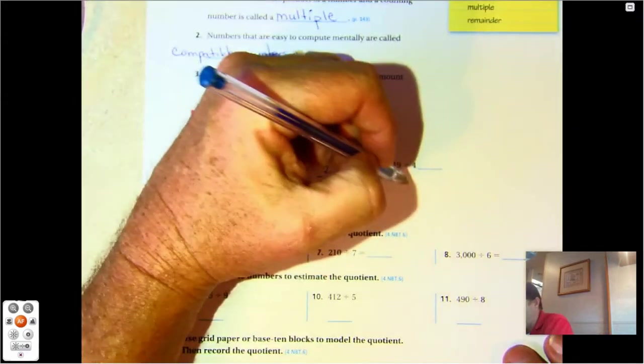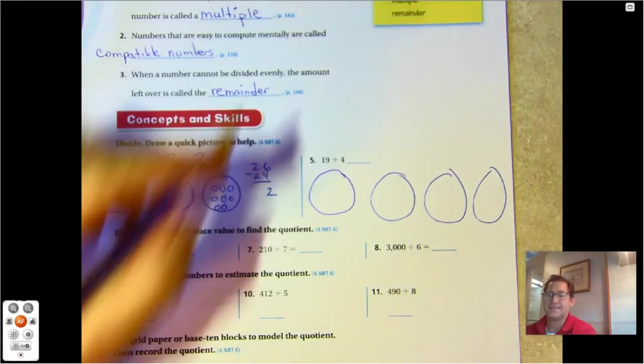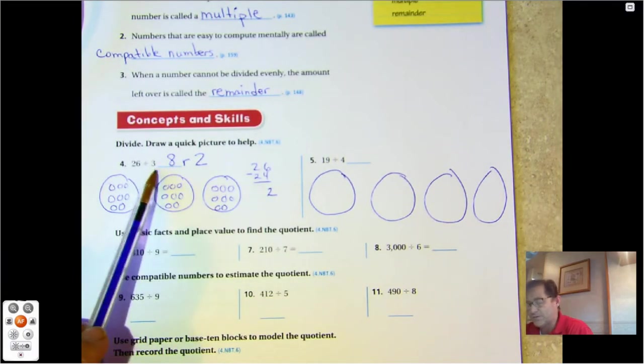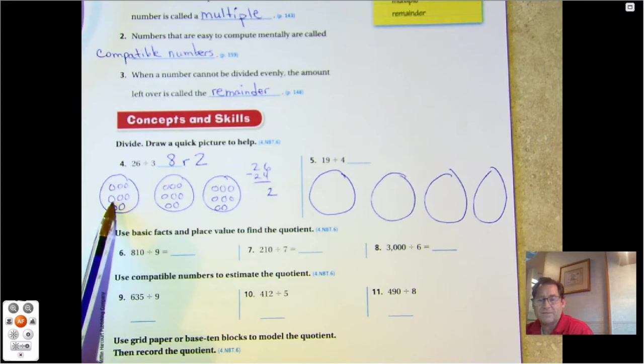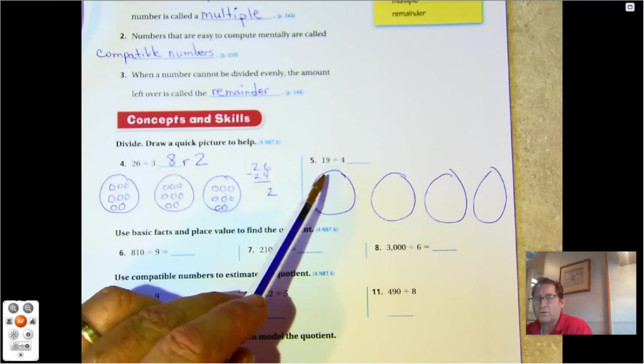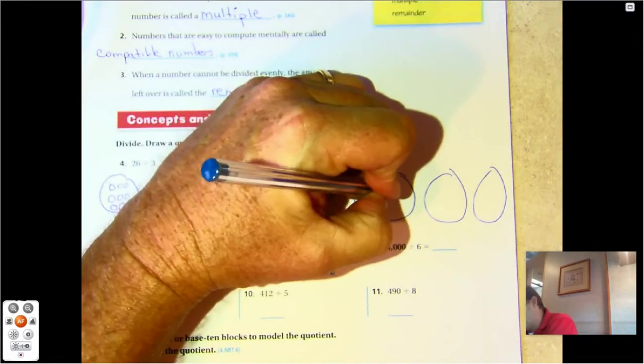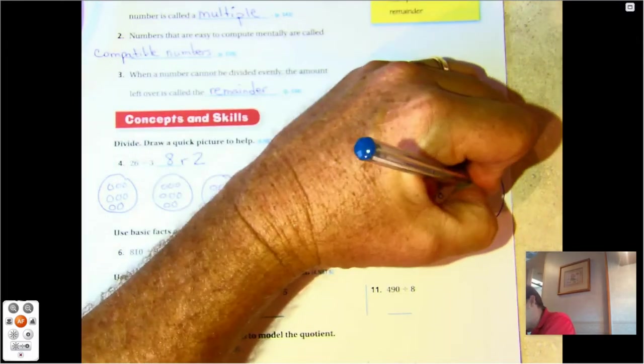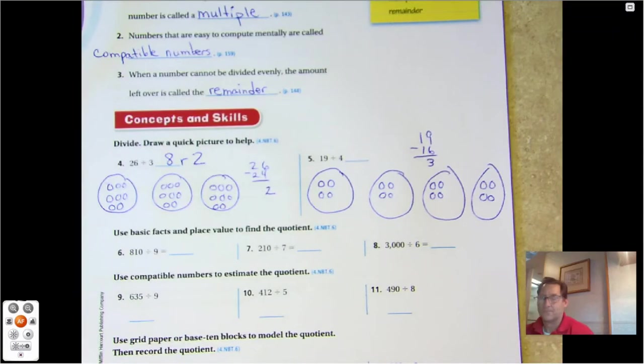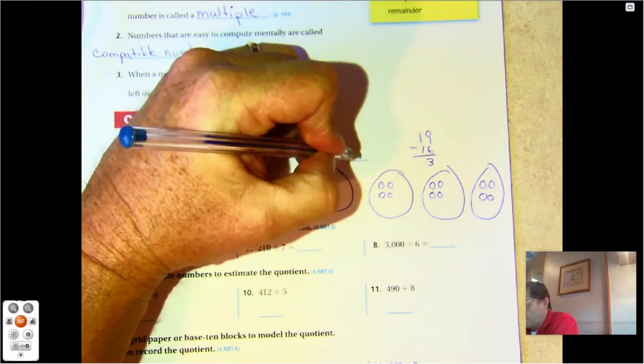19 divided by four. We have four groups and we're going to share 19. Is there four times something that would get me close to 19? Four, eight, twelve, sixteen. Four would, right? So four, eight, twelve, sixteen. 19 take away 16 is three. I have three left, but I have four groups. So it's going to be four remainder three.